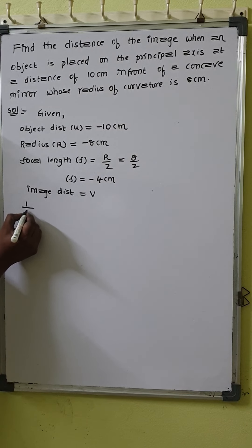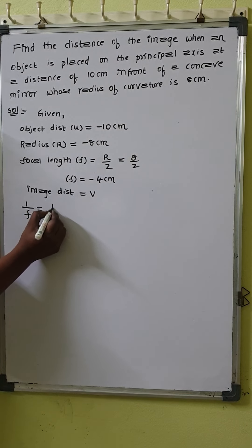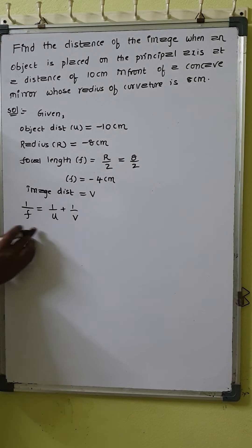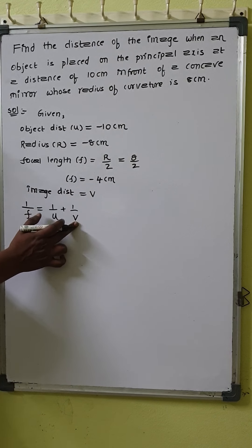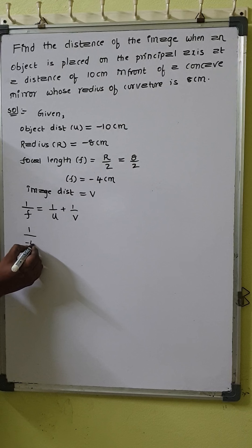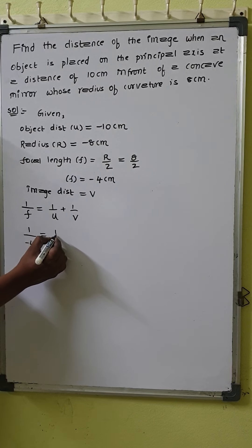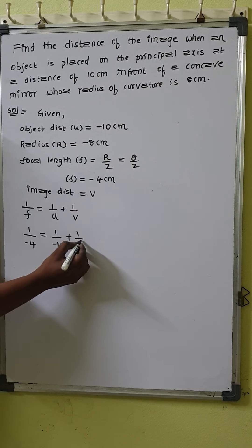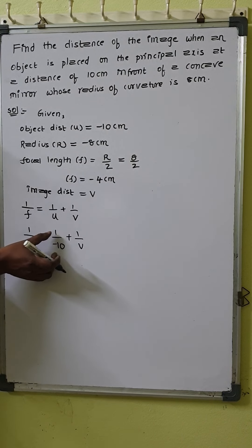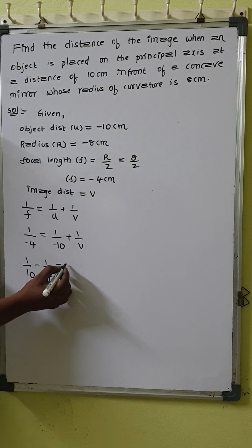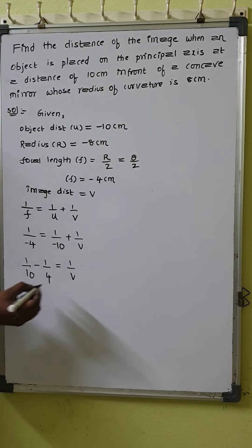To solve the problem, we use the mirror formula: 1/f = 1/u + 1/v. Here f is focal length, u is object distance, and v is image distance. Substituting: 1/(−4) = 1/(−10) + 1/v. Bringing −1/10 to the left side gives: 1/10 − 1/4 = 1/v.